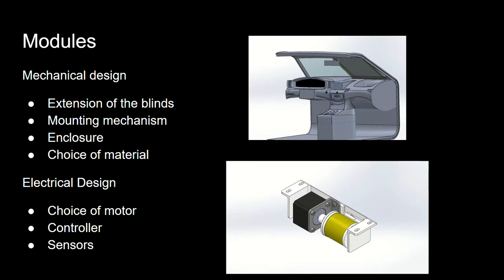For the mechanical design side, the modules are: extension of blinds, mounting mechanisms, enclosure, and choice of material. For the electrical design side, the modules are: choice of motor, controller, and sensors.